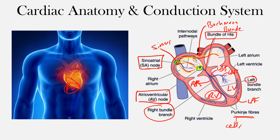The electrical conduction system is made up of specialized cells. Some cells have pacemaking function, meaning they can generate an impulse; others allow the impulse to transmit. The main function is to create an electrical impulse and transmit it in an organized fashion through the myocardium. This electrochemical process generates electrical energy that is captured by the electrodes when we perform an EKG.